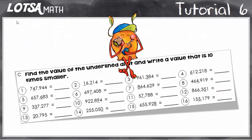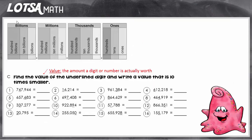For these types of questions, you have to find the value of an underlined digit and write a value that's ten times smaller. So let's think about what those directions mean.